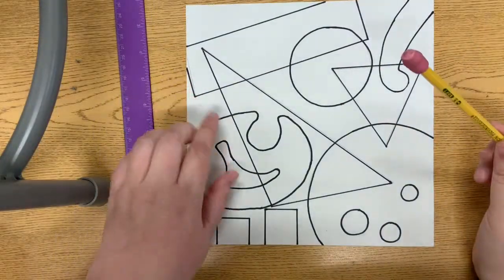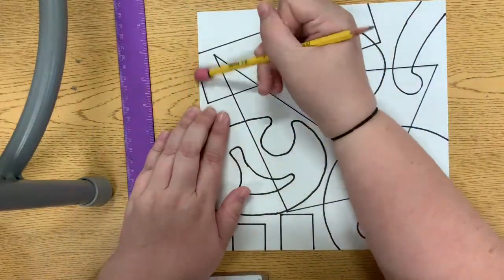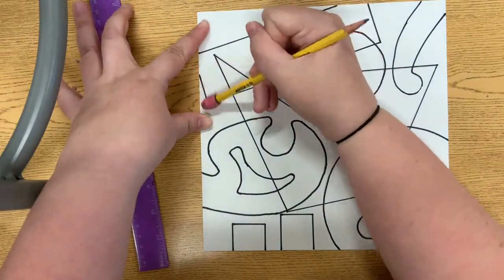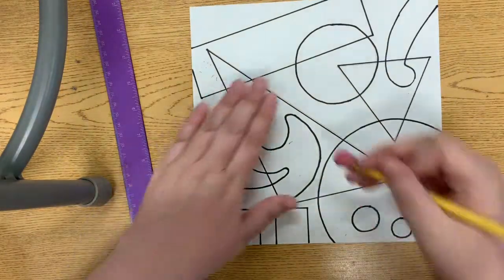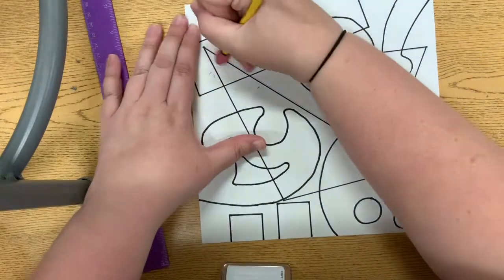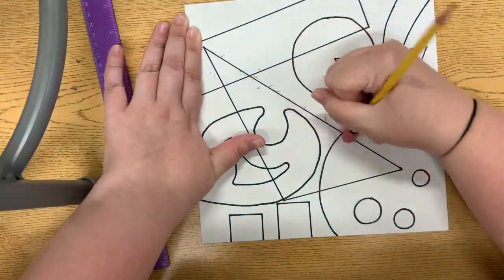After you finish outlining, gently erase any pencil marks that you see. You might not see that many, but just erase what you do see.